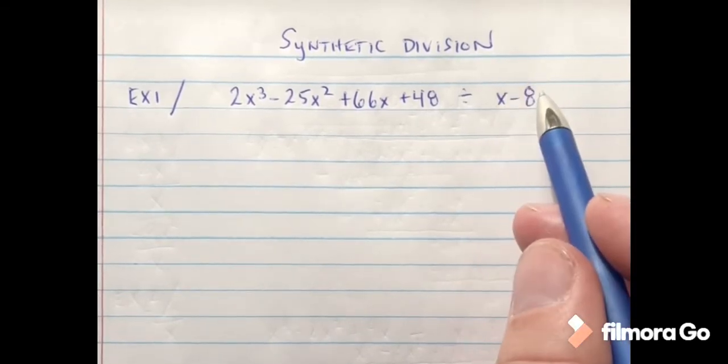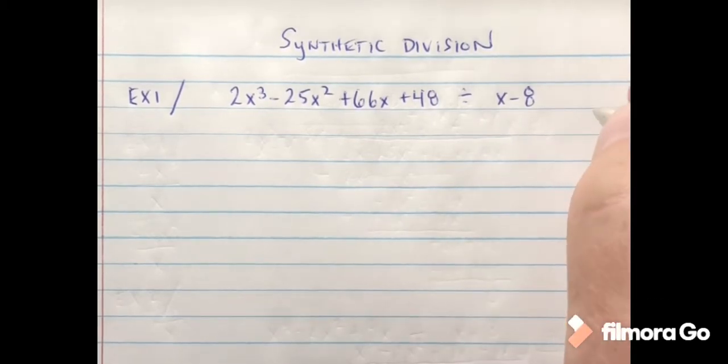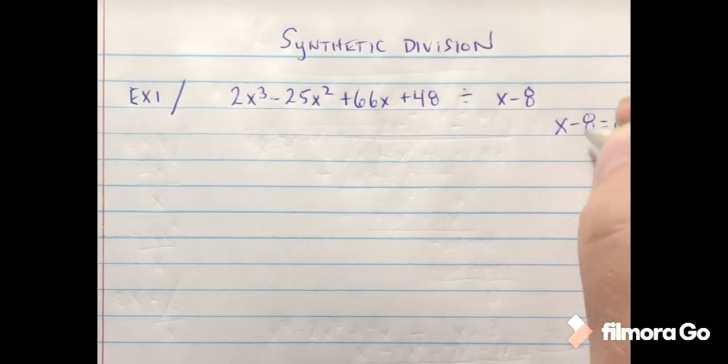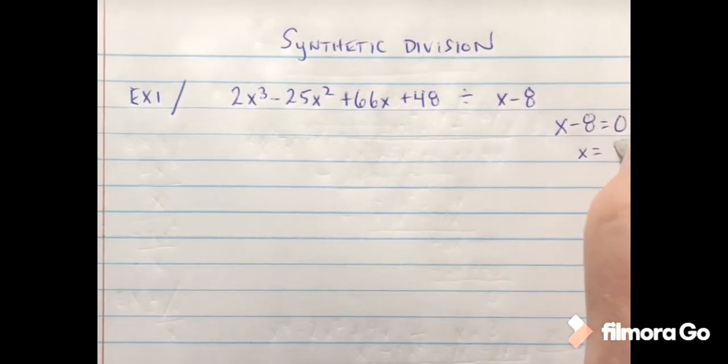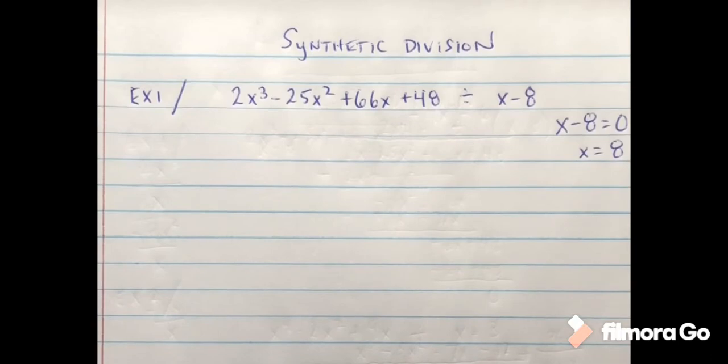So the first thing we want to do is take the value that we're dividing by and set that equal to zero. So if I say x minus 8 is equal to zero, I add 8 so it's going to give me x is equal to 8. Now the reason that I do that is that's going to allow me to determine what number goes in the box for my synthetic division.